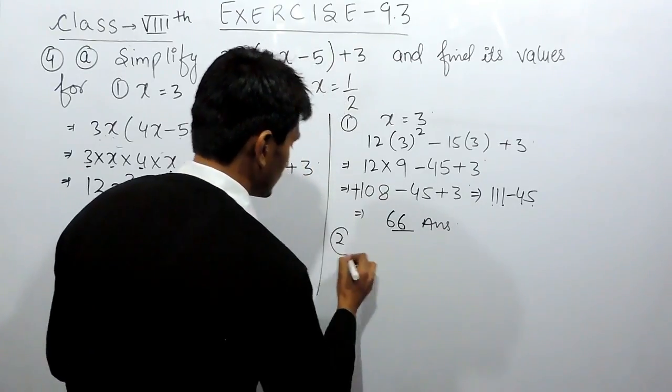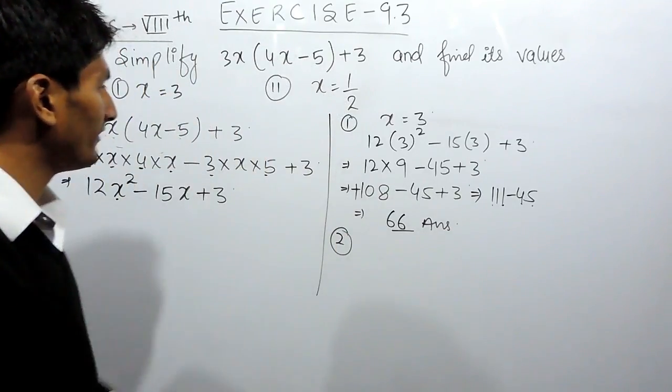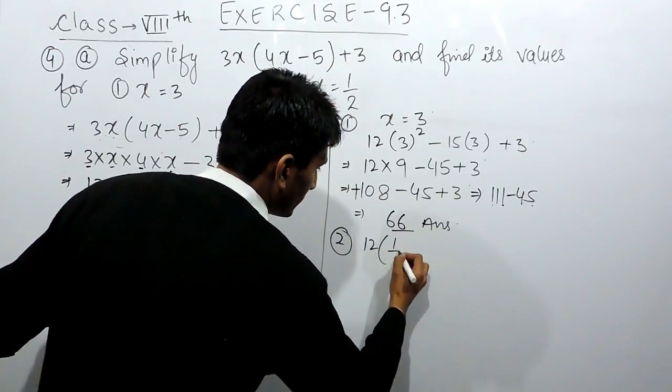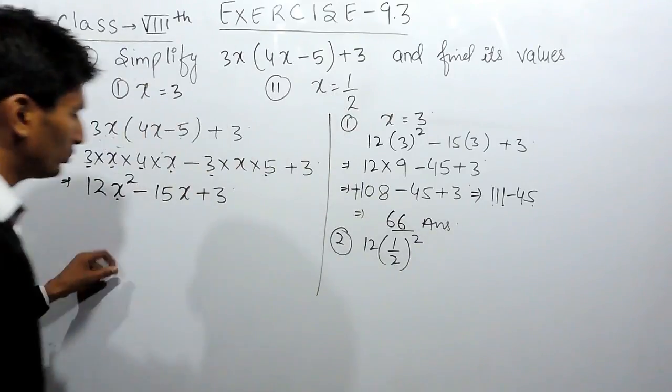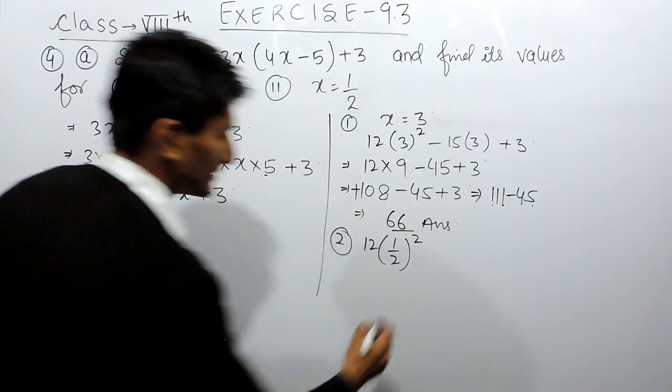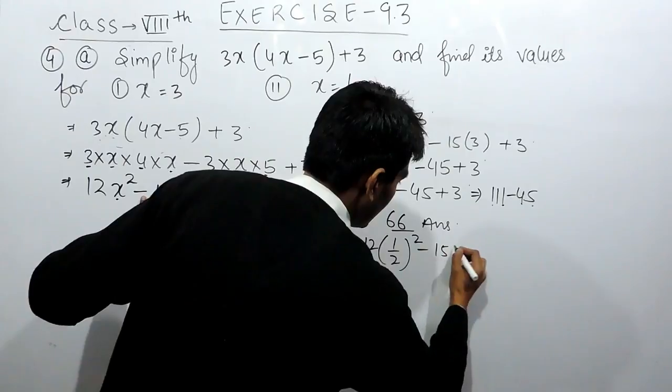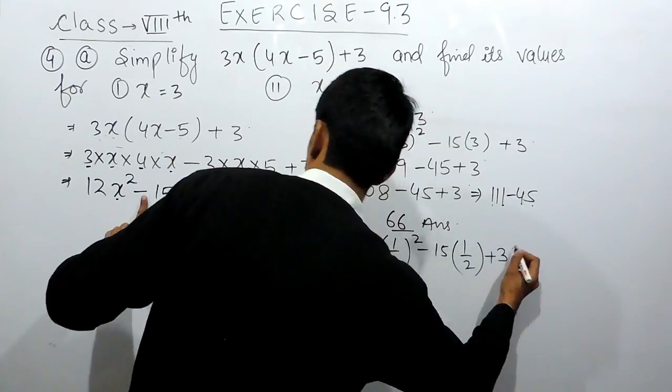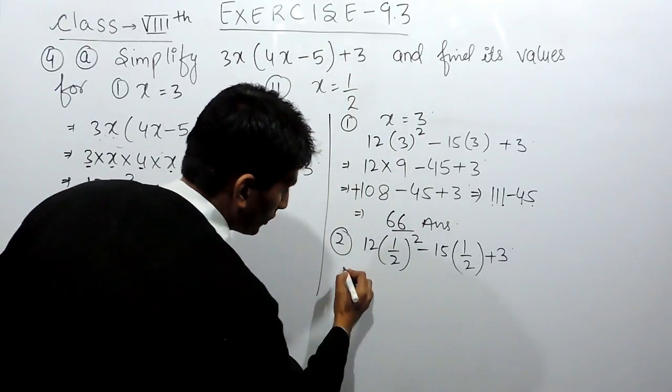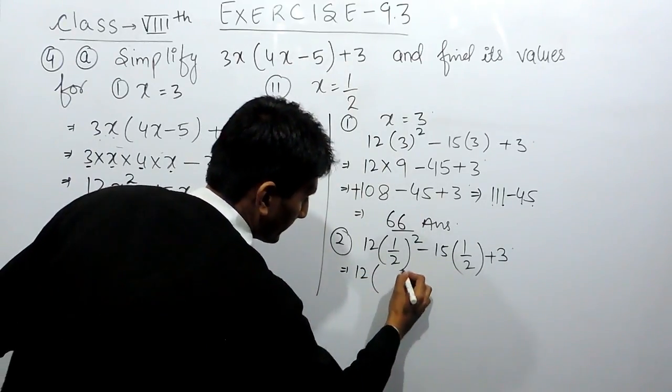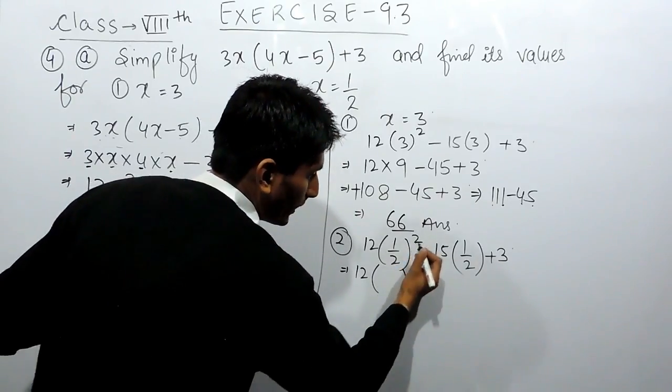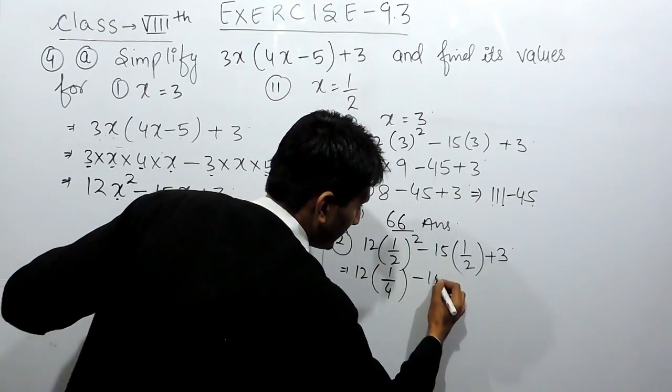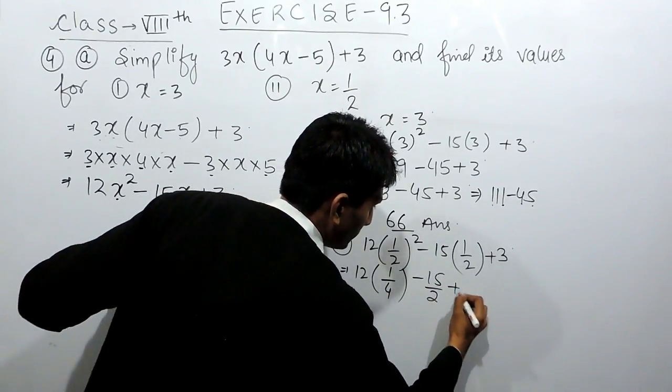For the second case, we have to substitute the value of x as 1 by 2. Instead of x, we have to write 1 by 2. This will be 12, 1 by 2 whole square minus 15 and this will be 1 by 2 and this will be 3. Further solving this, this will become 12 multiplied by 1 by 2 whole square means 1 squared is 1 and 2 squared is 4, and this is 15 by 2 plus 3.